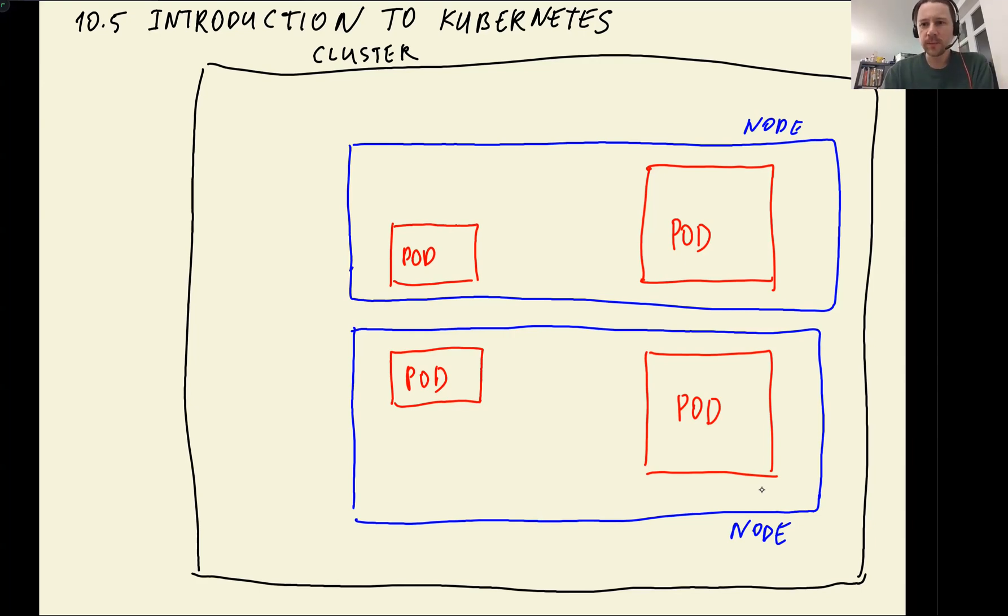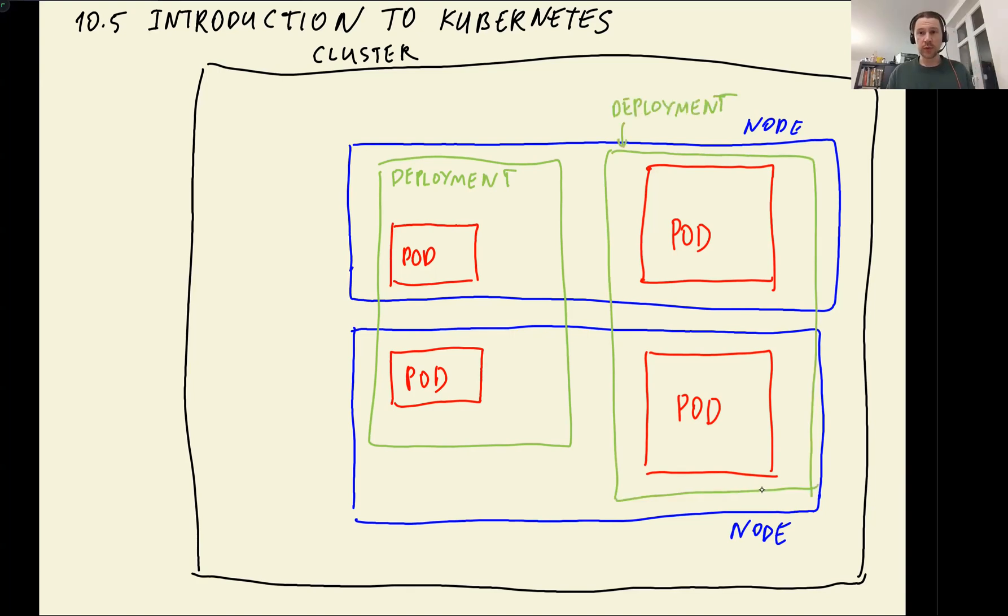And then we usually group these pods in deployments. Deployment. Then this is another deployment. All the pods within one deployment, they have the same Docker image. So if we think of an example, let's say this deployment is our gateway service.